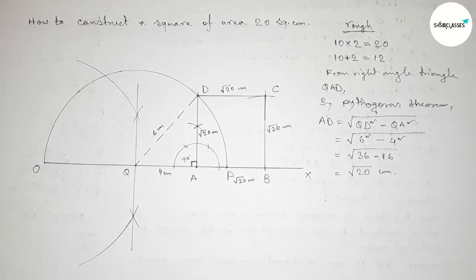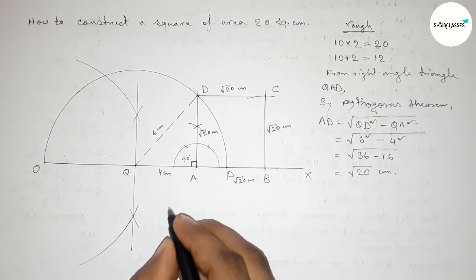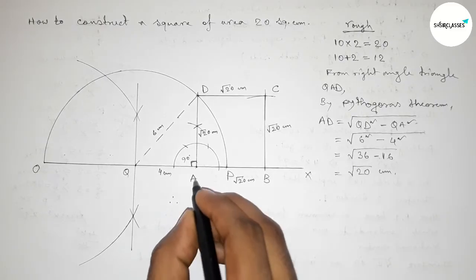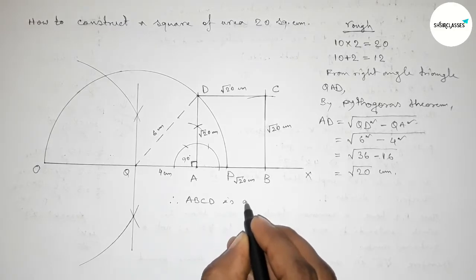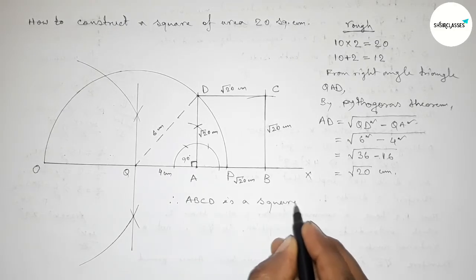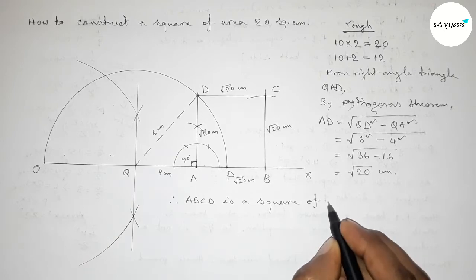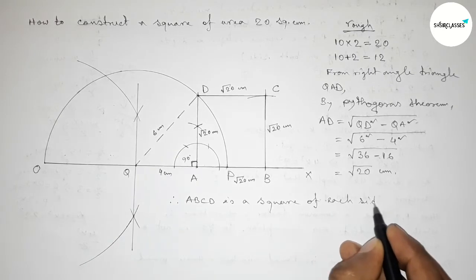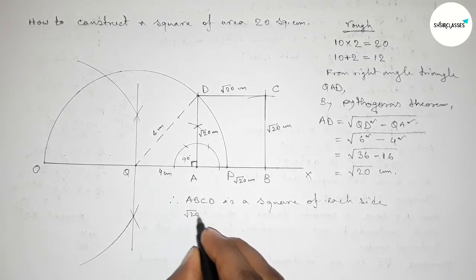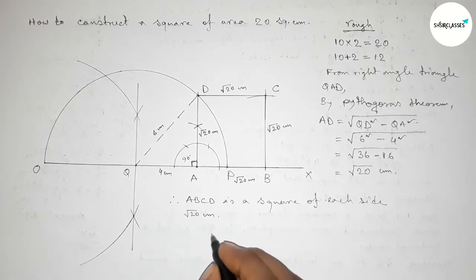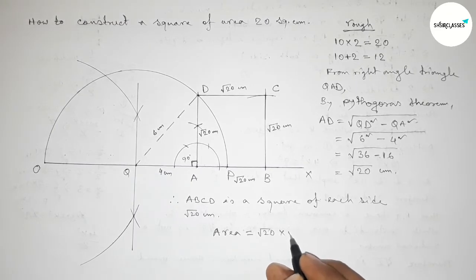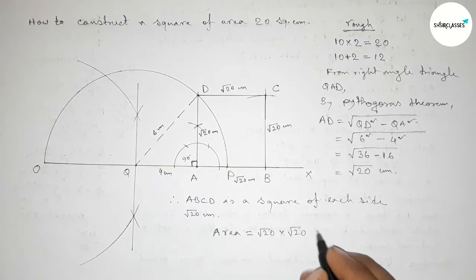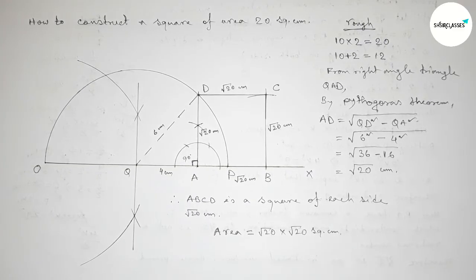All the sides are equal: this side is root 20 centimeters, this side also root 20 centimeters, and this side also root 20 centimeters. Therefore ABCD is the required square of each side root 20 centimeters. The area of this square equals side into side, which is root 20 into root 20, equal to 20 square centimeters.